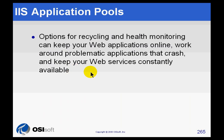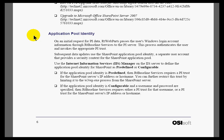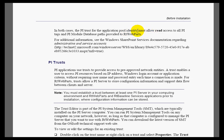Since this is a discussion on troubleshooting, it's a good time to remind you that there are some trusts required for the application pool identity. You'll find those trusts described at the bottom of the notes section on this slide, and also in the Application Pool Identity section of the IT Web Parts Installation Guide. Basically, you need to allow the application pool identity — or whatever Windows user is associated with it if it's been set to Configurable — read access to all the PI tags and modules that will be used. This was covered in greater detail in the Security section.